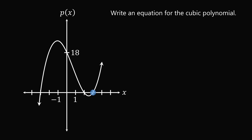We have one x-intercept at x equals 3, giving factor x minus 3. We have another x-intercept at 2, giving factor x minus 2. We have a third x-intercept at negative 3, giving factor x plus 3. We multiply all of these linear factors together, multiplied by a scaling factor a, and that will be the equation for the polynomial.